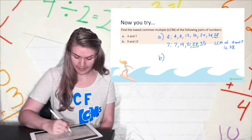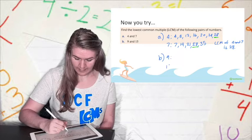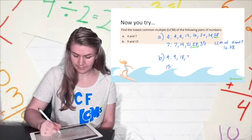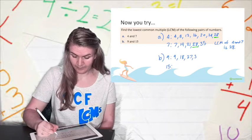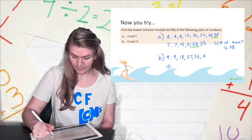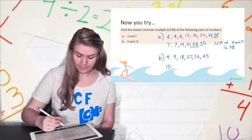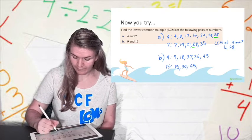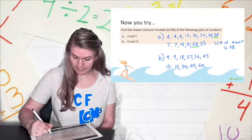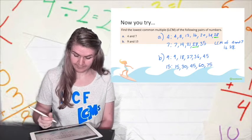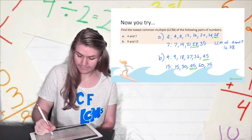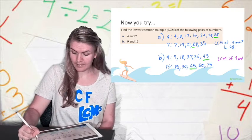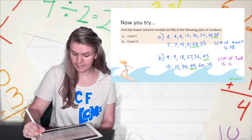And B. 9 and 15. These ones are a bit harder. Okay. 9, 18, 27, 36, 45. 15, 30, 45, 60, 75. There we go. I got it. 45. So the LCM of 9 and 15 is 45.